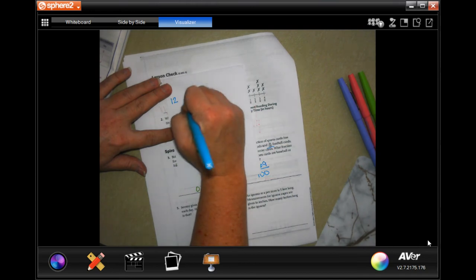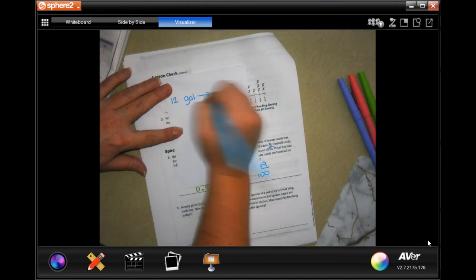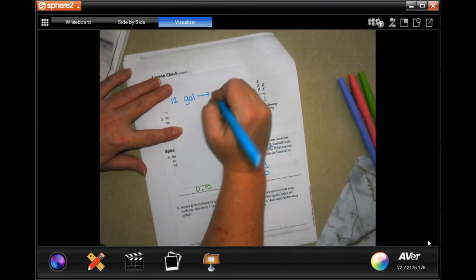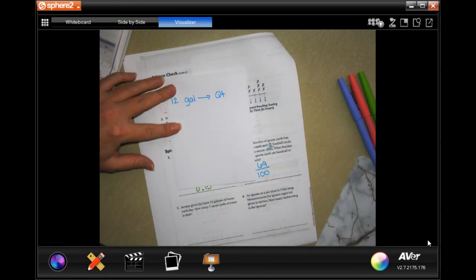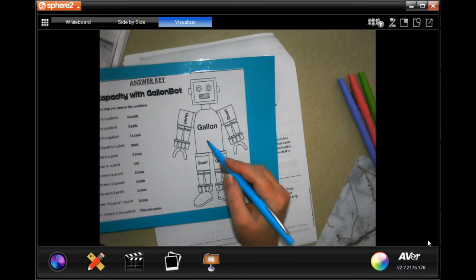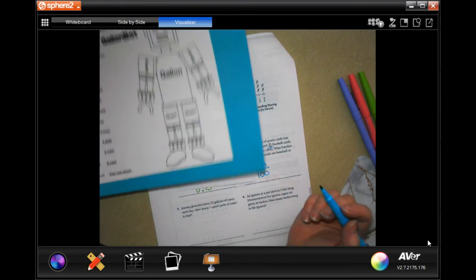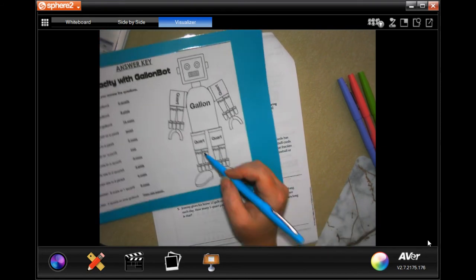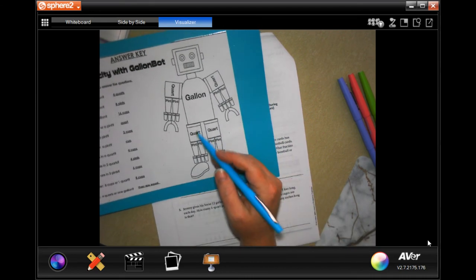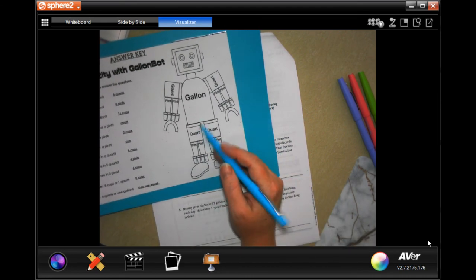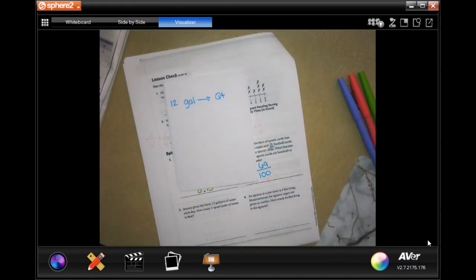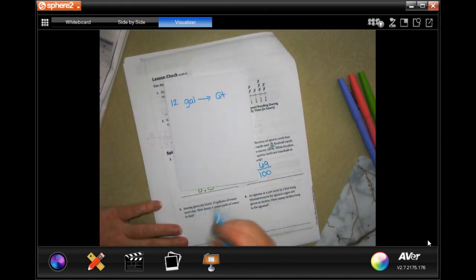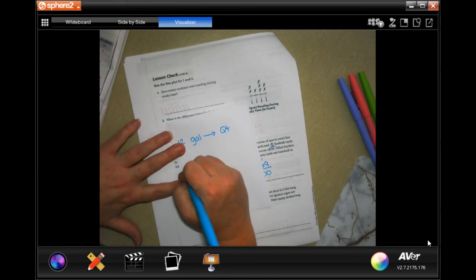So now we have 12 gallons and we want to go to quarts. Now on our friend Mr. Robot, gallons and quarts touch each other so I can go straight from gallons to quarts.